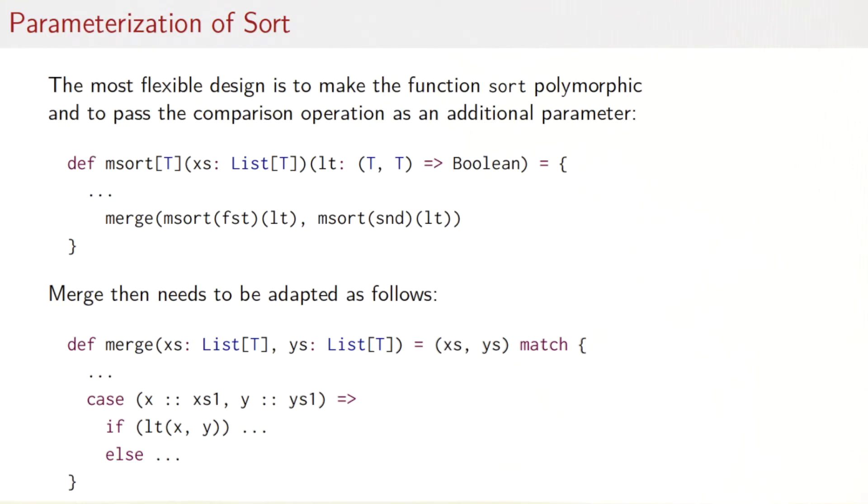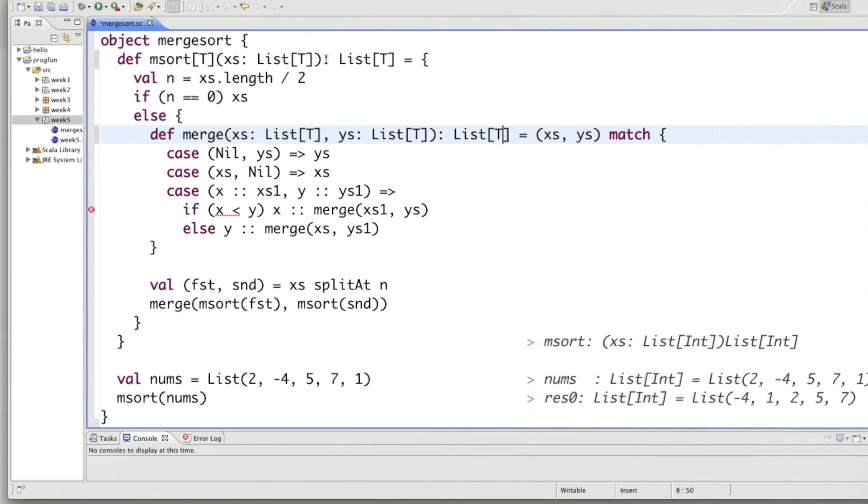Once we have that, then we need to apply lt in two instances. Let's see how we would do that in the worksheet. So I have here, I pass an lt which takes two t's and returns a boolean. And then I can write here, instead of x less than y, I can write here lt of x and y in the merge function. That's good, but I have another problem here for the sort here. Of course, I have to pass the correct lt function into the two recursive calls of m sort.